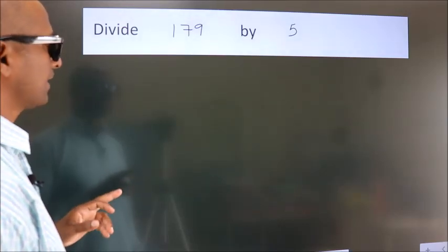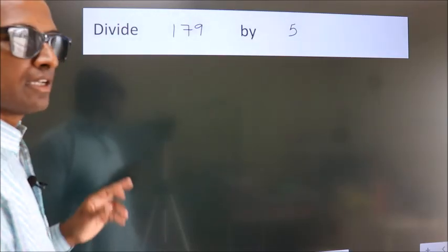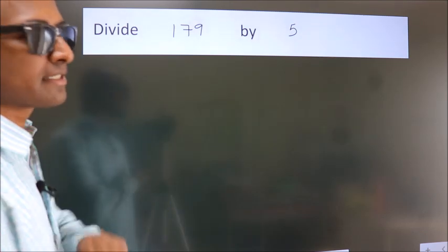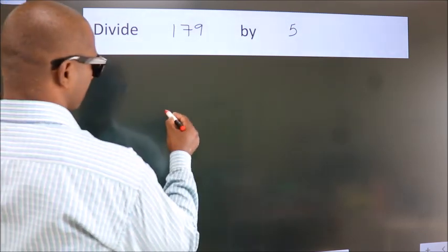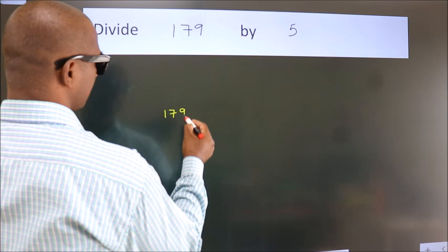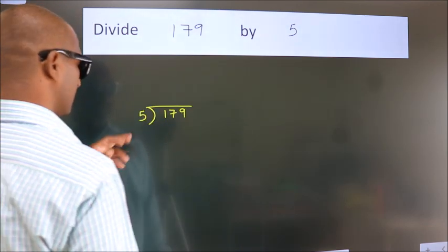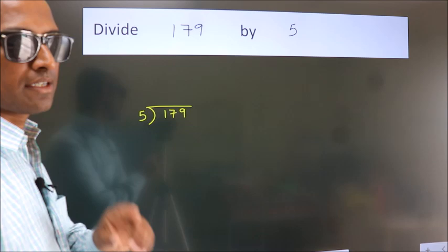Divide 179 by 5. To do this division, we should frame it in this way. 179 here, 5 here. This is your step 1.